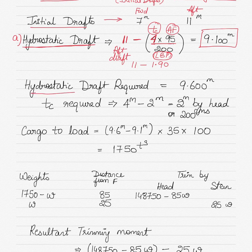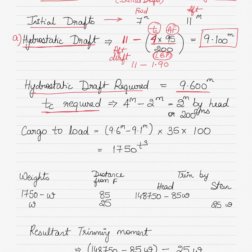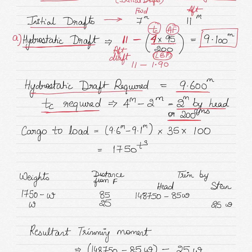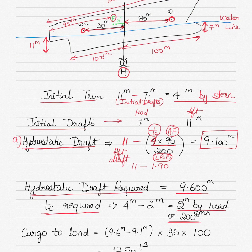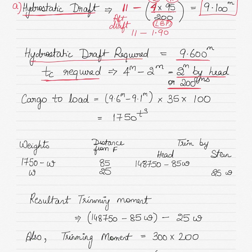You need to finish with a hydrostatic draft of 9.6 meters after cargo operations. Additionally, you need a final trim of 2 meters by stern, but the ship is currently 4 meters by stern. Therefore you need to change trim by 4 minus 2 equals 2 meters by head, or 200 centimeters by head, because the ship is initially trimmed by stern and you need to bring the forward part down by 2 meters.